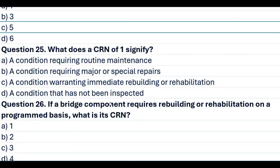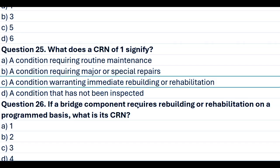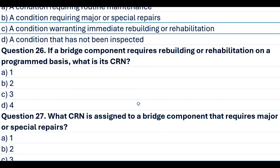Question 25. What does a CRN of 1 signify? A. A condition requiring routine maintenance. B. A condition requiring major or special repairs. C. A condition warranting immediate rebuilding or rehabilitation. D. A condition that has not been inspected. Answer C. A condition warranting immediate rebuilding or rehabilitation.